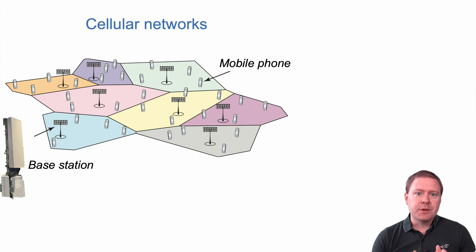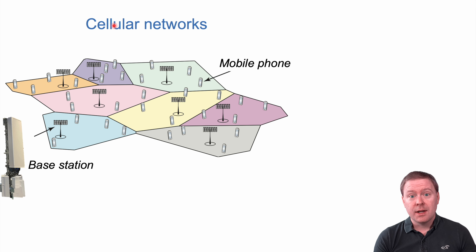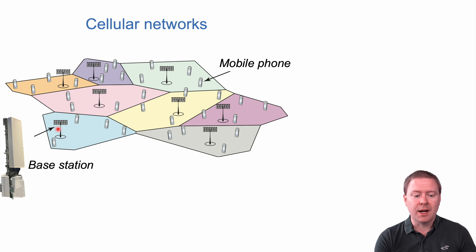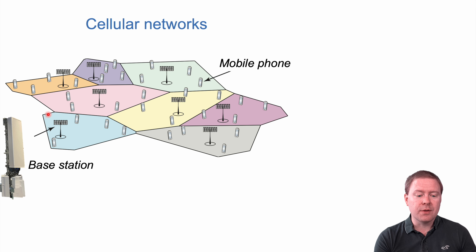6G is a future technology for cellular networks, or mobile communication networks. These are networks that have already been used for a long time, where we have mobile phones or other connected devices that connect to base stations or cell towers located at different places in our world. Each of these cell towers serves a particular area that we call a cell — that's why it's called cellular networks.